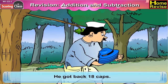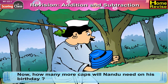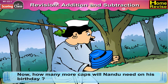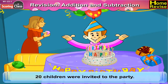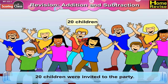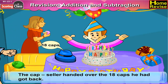The cap seller quickly put his cap back on his head and collected all the others. He got back 18 caps. Now, how many more caps will Nandu need on his birthday? 20 children were invited to the party. The cap seller handed over the 18 caps he had got back.